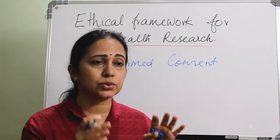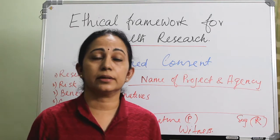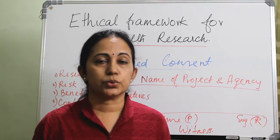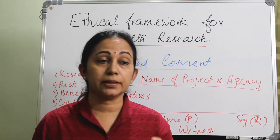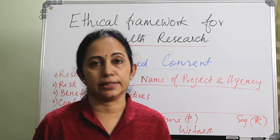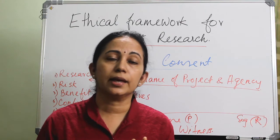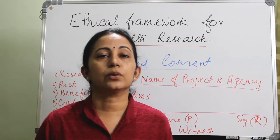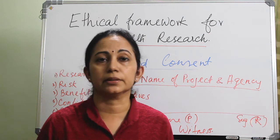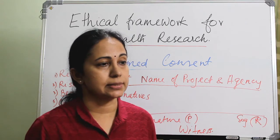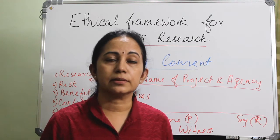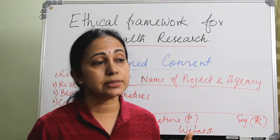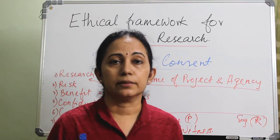Informed consent is very important and has a defined structure. The stakeholders involved in informed consent are: first, the researchers and the associated institution, who prepare the informed consent, make the participant aware of it, and get it signed. Second is the participant, who should give a fully informed consent without any force from the researcher or any other agency. Sponsors, regulators, and monitors are also stakeholders in the consenting process and should supervise the efficiency of the informed consent.